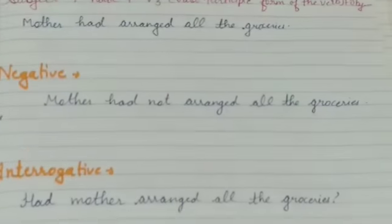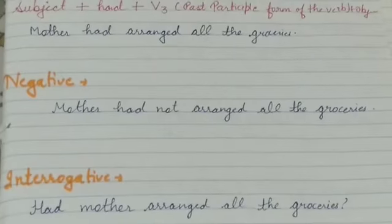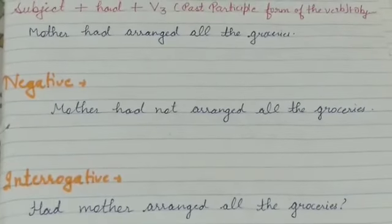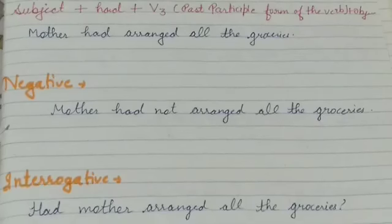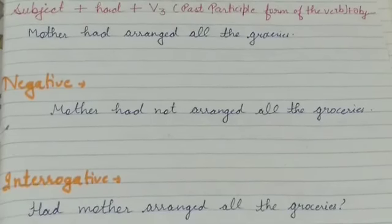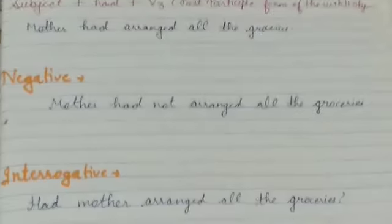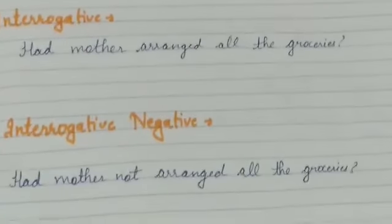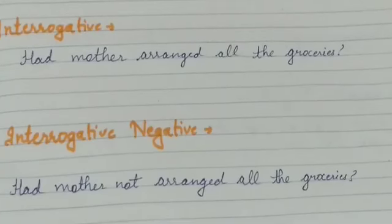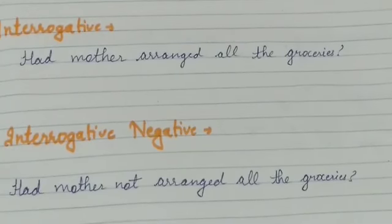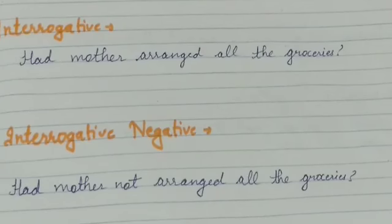Negative sentence: 'Mother had not arranged all the groceries.' In the negative sentence we only add 'not' after 'had'. For the interrogative sentence, we write the helping verb first: 'Had mother arranged all the groceries?' And for the interrogative negative: 'Had mother not arranged all the groceries?' We add 'not' to the interrogative sentence. That is past perfect tense.